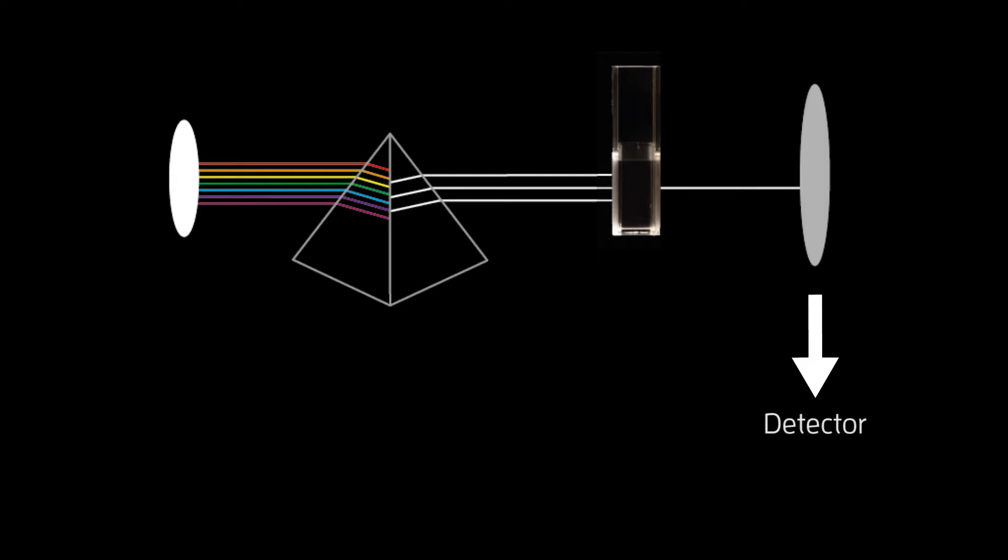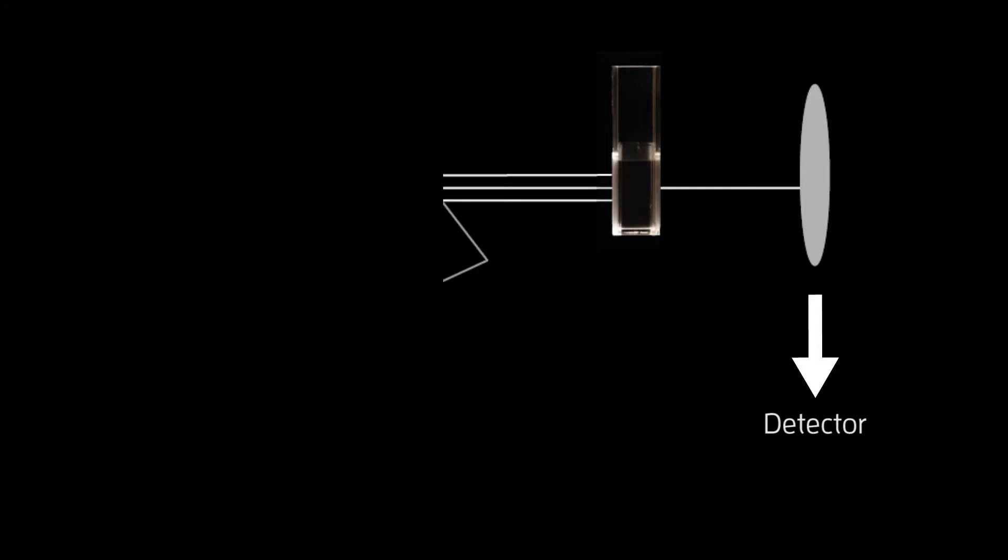Finally we have the detector. This measures the absorbance or transmittance of the sample. Transmittance means the light that passes completely through the sample whereas absorbance is a measure of the light that doesn't make it through.